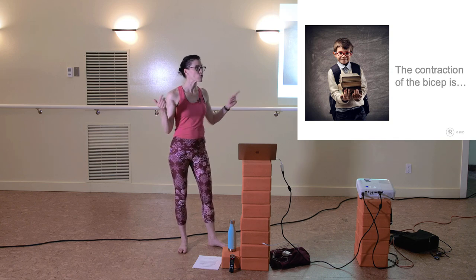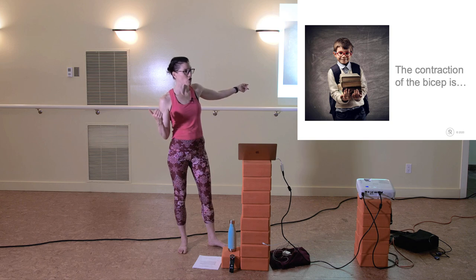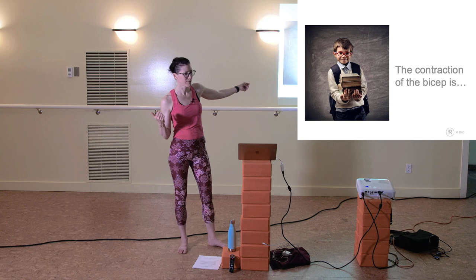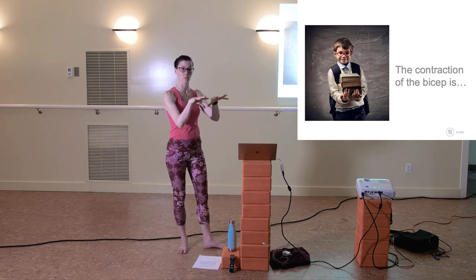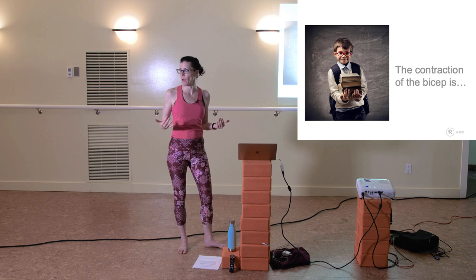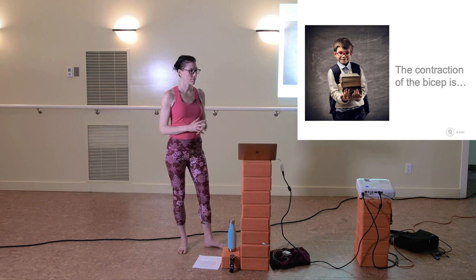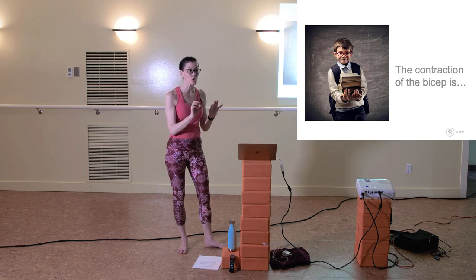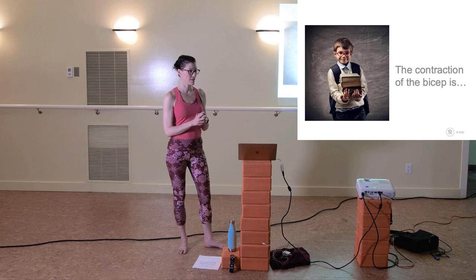In yoga we do tons of isometric work — getting into warrior two and just holding. Everything is working. When you're static and not moving, the muscles are working but not changing length. You may be sweating even though there's no perceptible movement from the outside. They did concentric work to get there and now they're holding isometrically.